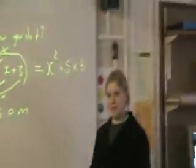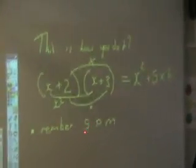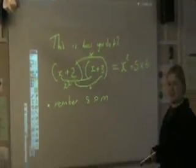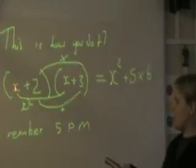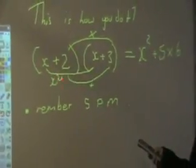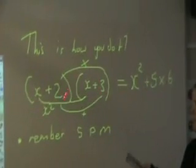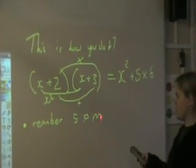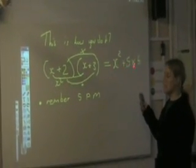Over to Becky for the answers. This is how you do it. You've got to remember Sir Paul McCartney — that's what SPM means. S means square, P means plus, and M means multiply. You've got two x's, so you do x squared. Then you plus 2 and 3, which makes 5. Then you multiply 2 times 3, which makes 6. So your answer is x squared plus 5x plus 6.